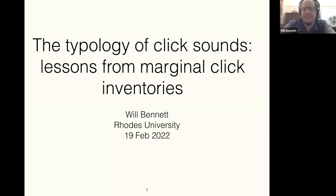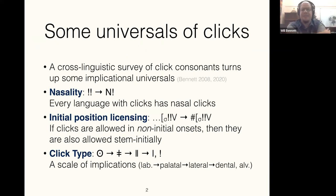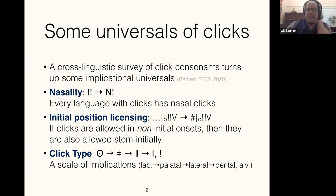I'm going to talk about the typology of click sounds. What I want to focus on is the theme of what we can learn from the most marginal, most restrictive, most impoverished kinds of click consonant systems. Clicks are a bit strange — they aren't found in very many languages of the world, but they are found in huge quantities in the few languages that do have them. They also have some anomalous characteristics that I've turned up by looking at distributions of click consonants across different languages, doing a cross-linguistic survey. In doing so, I stumbled on a couple of universal implicational relationships.